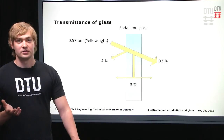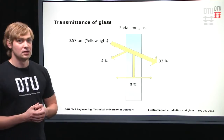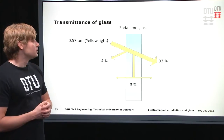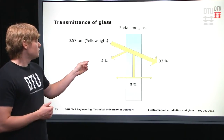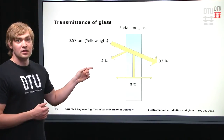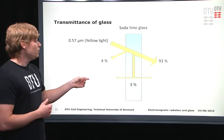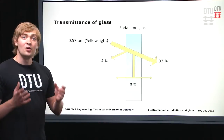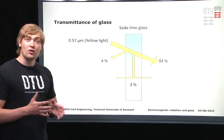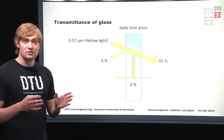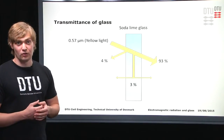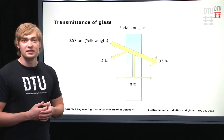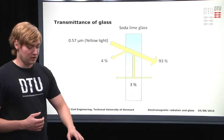To study what happens with light as it goes through a pane of glass, take one wavelength: 0.57 micrometers. 4% of that light is reflected off the surface, 3% is absorbed by the glass and then re-emitted as blackbody radiation again — but now at the temperature of the glass, which is of course much, much colder than the surface of the sun. And 93% of the light is allowed to go through the pane of glass.